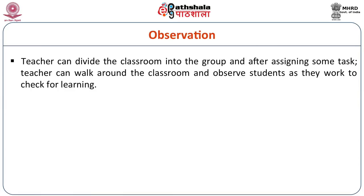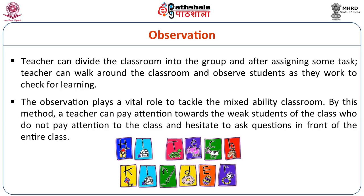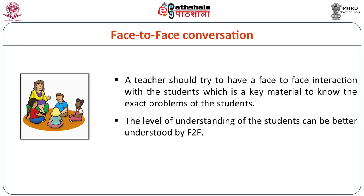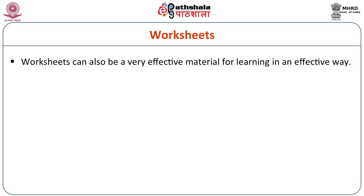Observation is also very important. The teacher can divide the classroom into groups and, after assigning tasks, walk around and observe students as they work to check for learning. What they are learning is important, but how they are learning is more important. Observation plays a vital role in tackling the mixed-ability classroom. By this method, a teacher can pay attention to weak students who do not pay attention and hesitate to ask questions in front of the entire class because they feel shy. Face-to-face conversation is also a material — a teacher should try to have face-to-face interaction with students, which is a key material to know the exact problems of students.